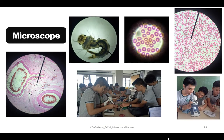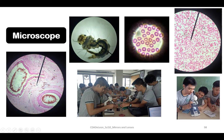Here are some pictures taken using compound microscopes. In this picture we have the comparison between artery and vein. This shows human red blood cells. And this is a photo of my students using compound microscopes.